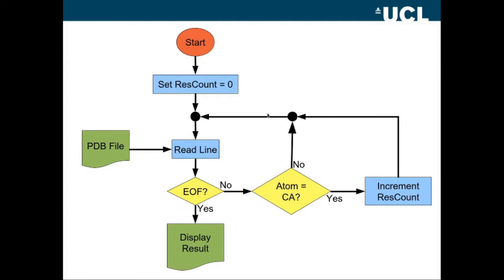So we test whether the atom is a C-A. If it isn't, then we carry on round, we read another line, and we keep looping round like this until we do find a C-A. Once we've found a C-A, then we increment this variable ResCount, loop back round and read another line. So this will keep looping round here every time we don't have a C-A. Every time we do, then we'll increment the ResCount and carry on until we get to the end of the file when we can display the result.